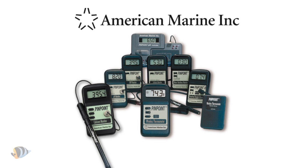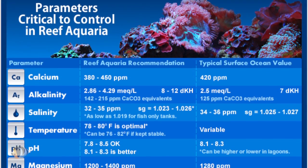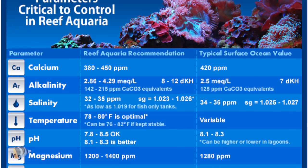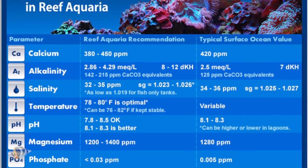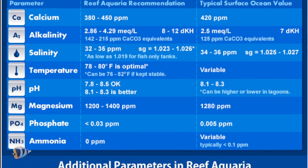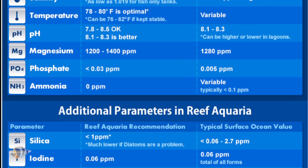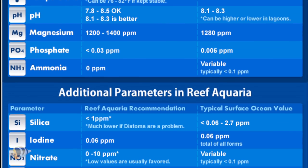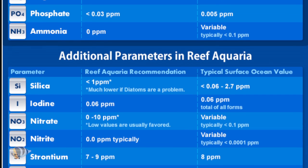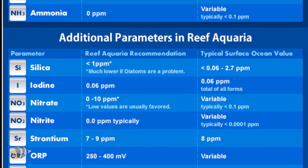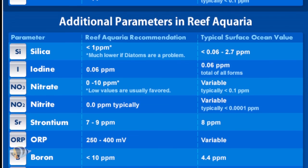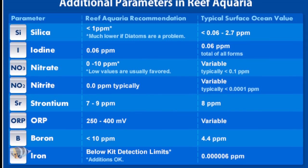The electronic monitors offered by American Marine are even more helpful because they give you a constant electronic reading. Having a list handy of ideal reef tank parameters is always helpful. That way when you test your water you'll be able to easily tell if your parameters are out of whack. We've included a link to the reef tank parameters chart on our website in the video description so you can bookmark or print it out for future reference.